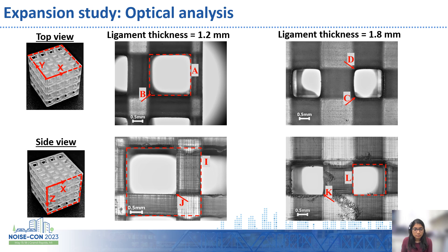For simplicity, only one image for each ligament thickness is shown for both the top view and the side view. For the ligament thickness of 1.2 mm, the shape is very well maintained with minor curvatures seen around the corners. As the ligament thickness increases, the top view shows that the degree of curvature is increasing, which is a result of increased interpolymer interactions due to thermal exposure. The pores along the depth maintain the pore size and shape much closer to the design when compared to those on the XY plane.